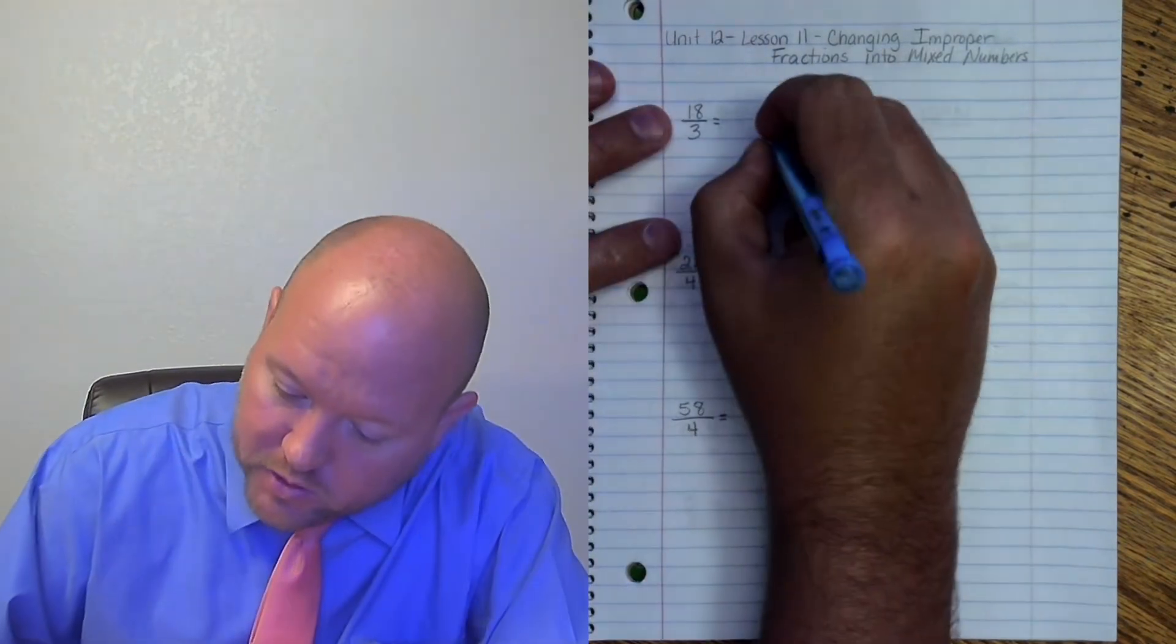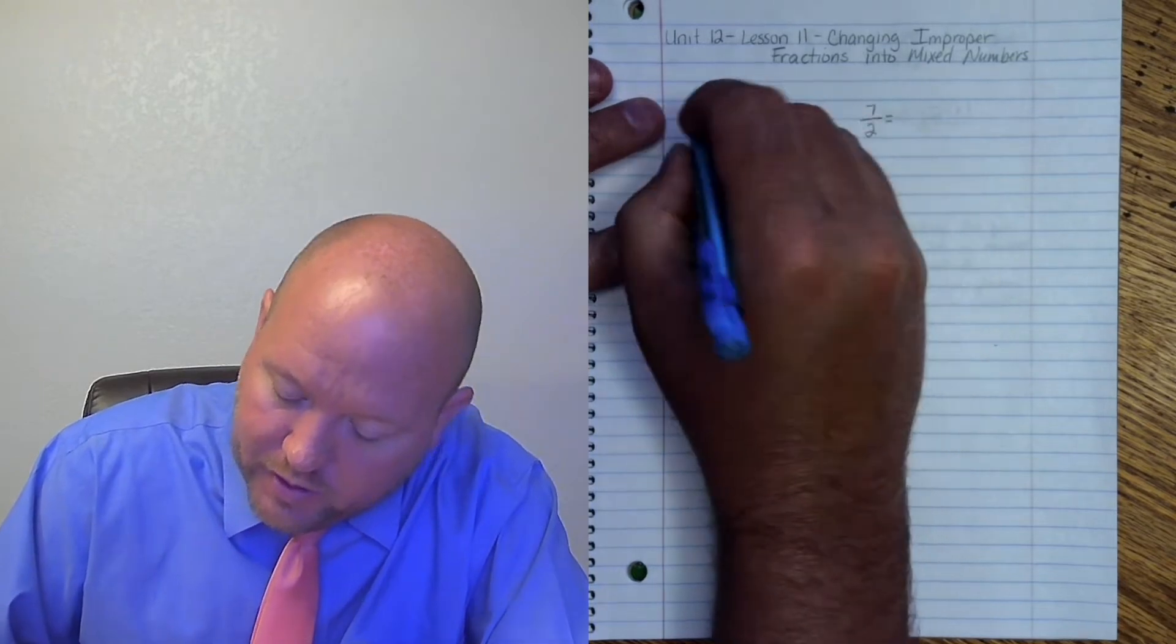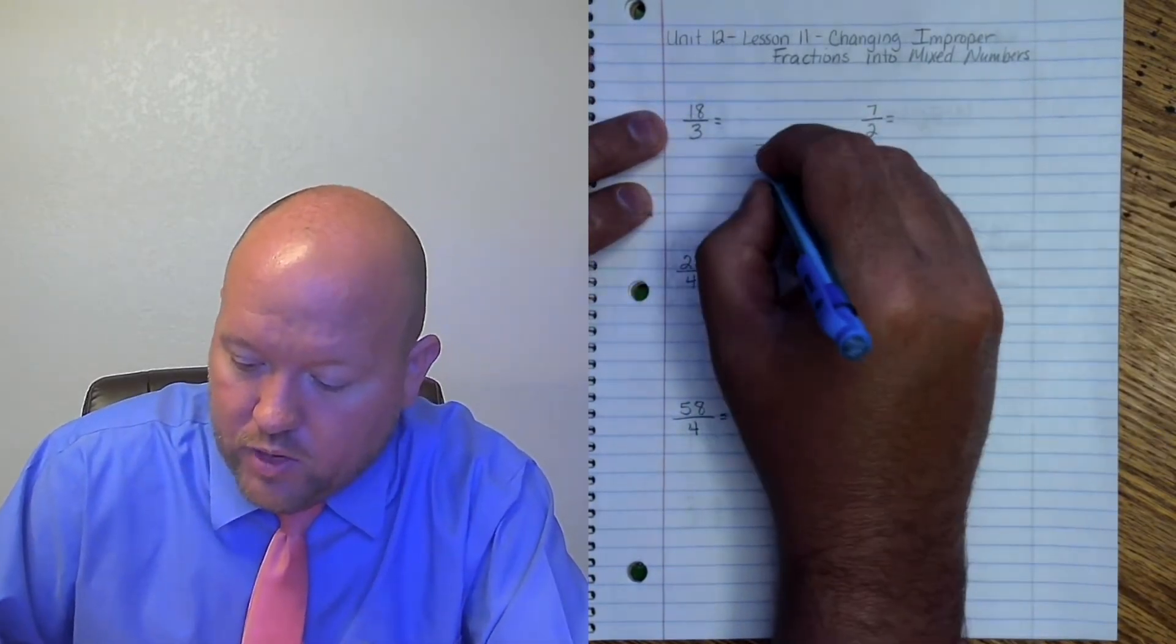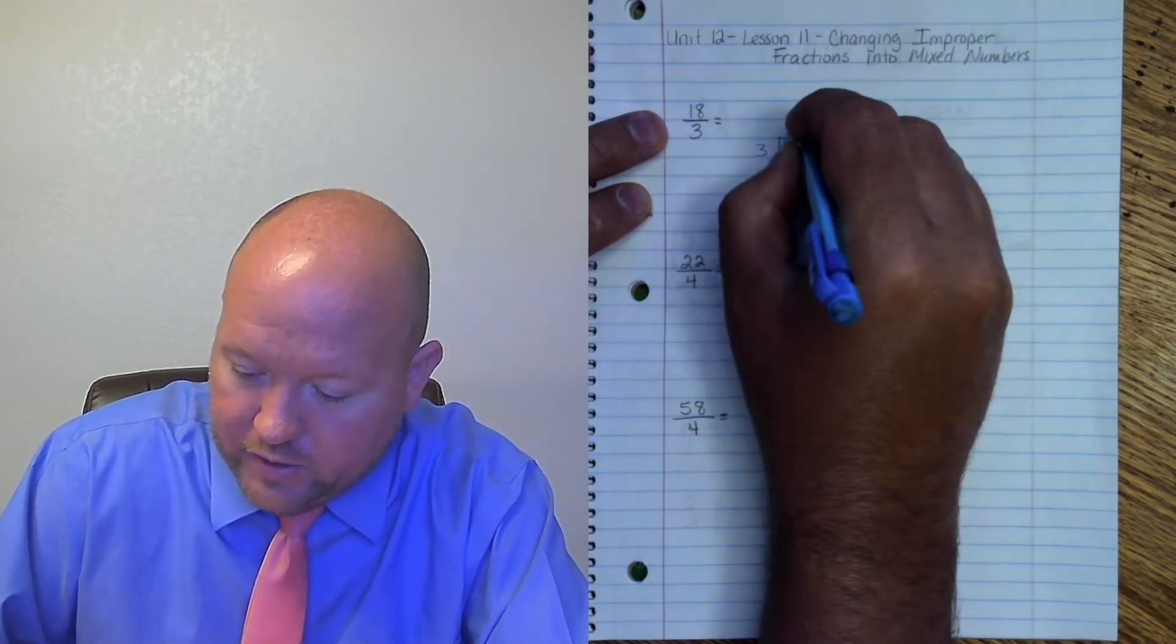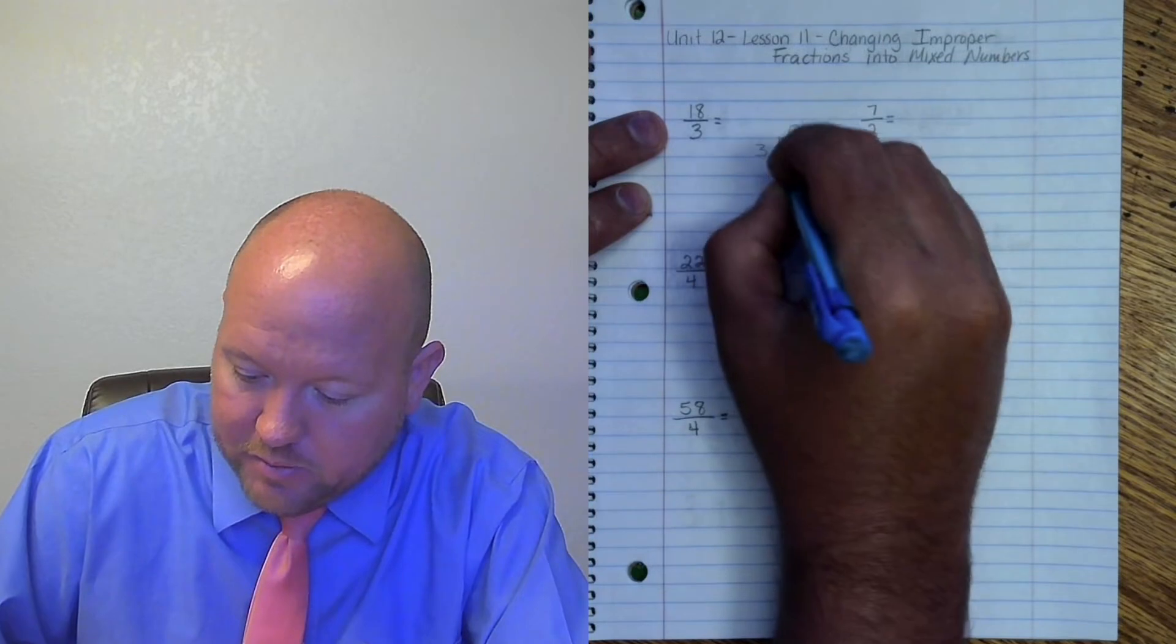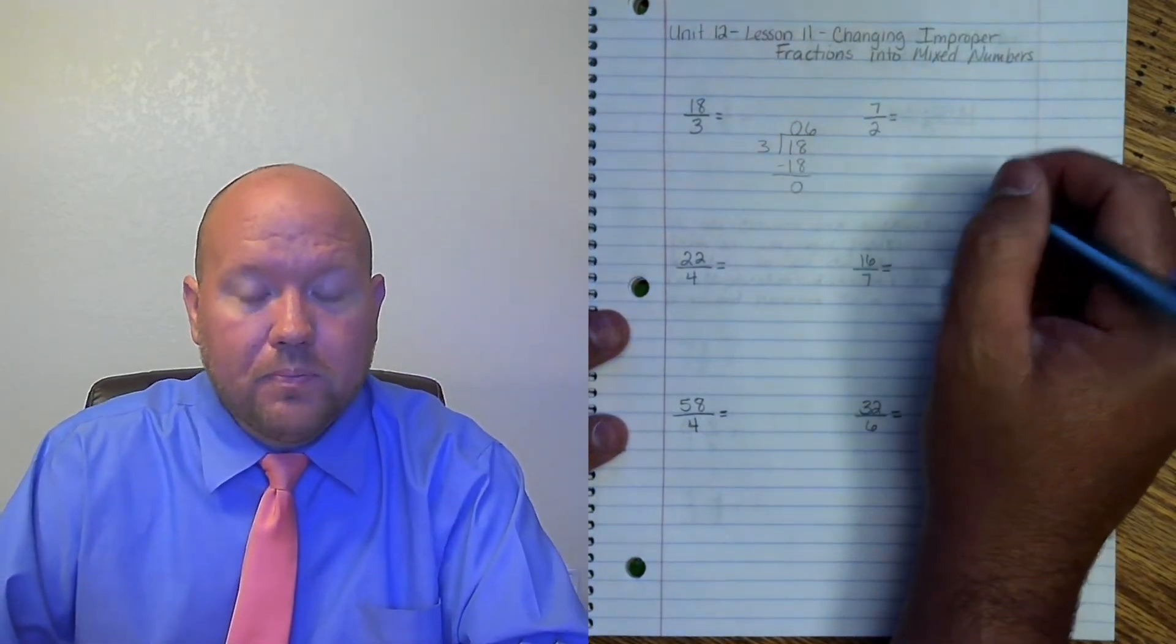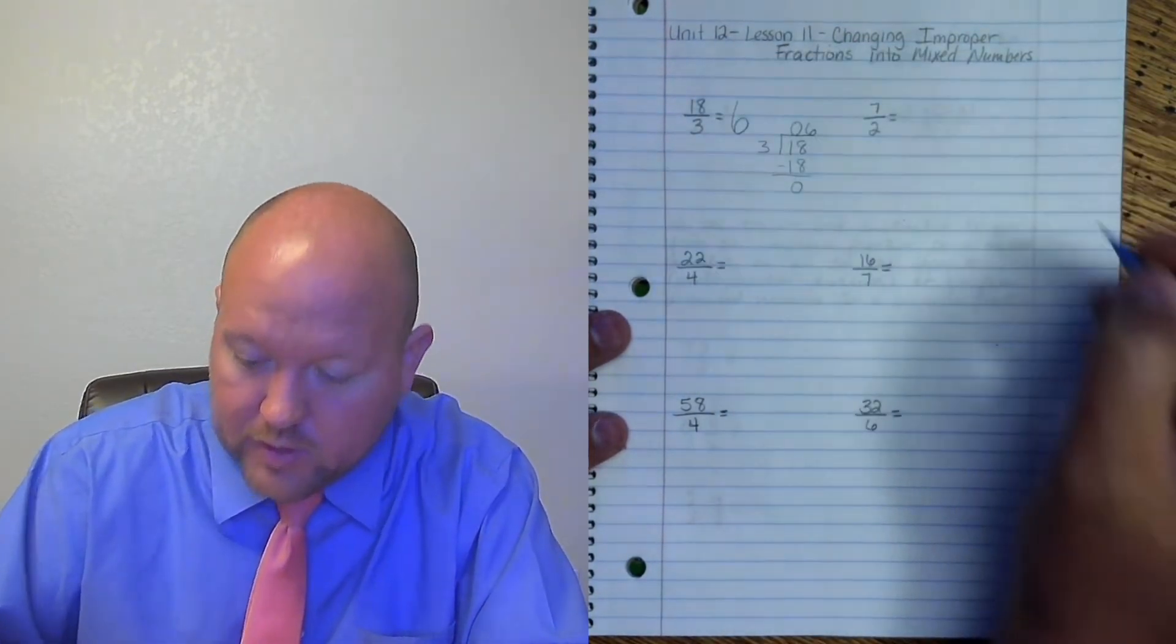Let's go ahead and set up my long division algorithm for this one. 18 is the dividend, it goes inside. 3 is the divisor. 3 goes into 1 zero times. 3 goes into 18 six times. 6 times 3 is 18. 18 minus 18 is 0. This one has no remainder and therefore you just have the whole number 6.